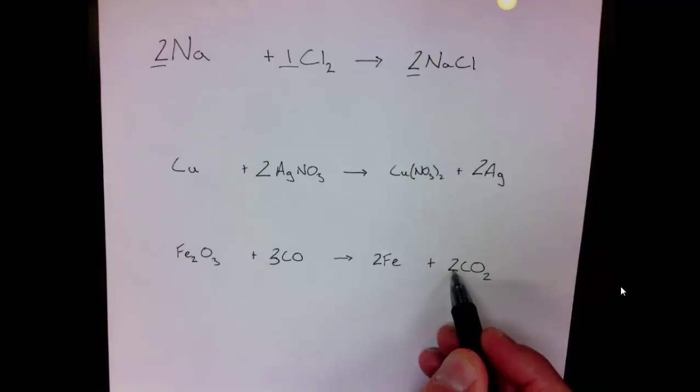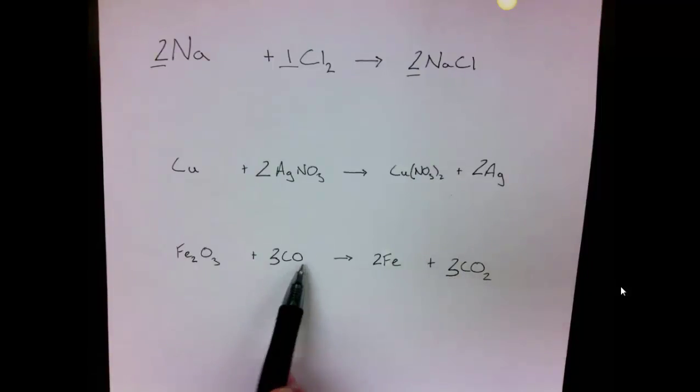So now I have three carbons, and I've changed this to a three, I now have three carbons and I have six oxygens. Three and three make six, so that's going to be balanced.